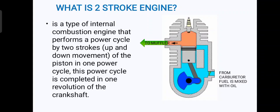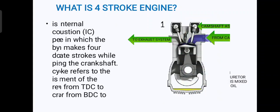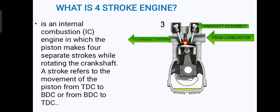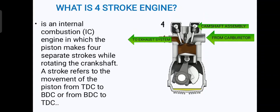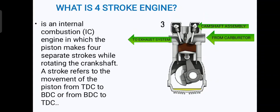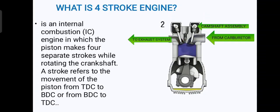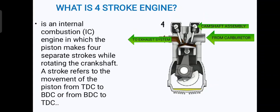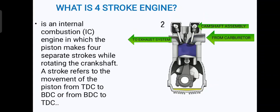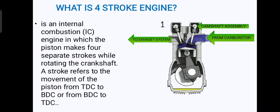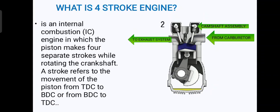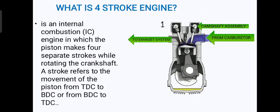Next is the four-stroke engine. A four-stroke engine is an internal combustion engine in which the piston makes four separate strokes while rotating the crankshaft. The four-stroke cycle of an engine consists of intake, compression, power, and exhaust. A stroke refers to the movement of the piston from top dead center to bottom dead center, or from bottom dead center to top dead center.